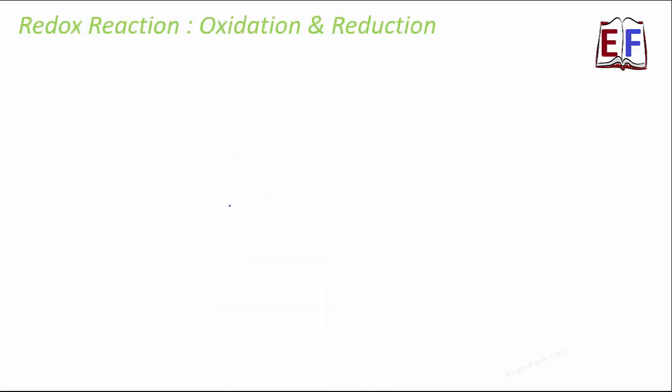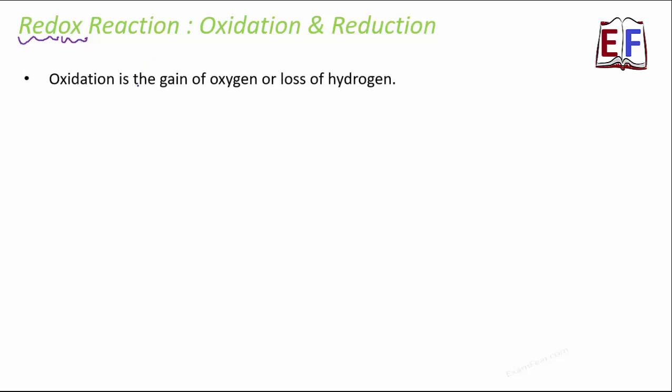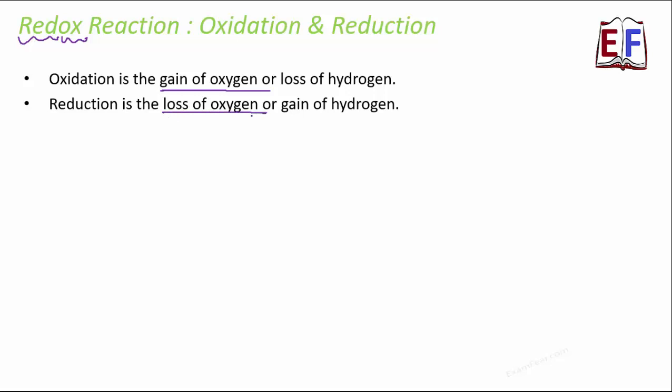The next reaction we want to discuss is a redox reaction — redox meaning reduction-oxidation. Oxidation, as the name suggests, means oxygen is getting added — it is the gain of oxygen. Reduction means loss of oxygen. In terms of hydrogen: oxidation is loss of hydrogen and reduction is gain of hydrogen. To keep it simple, just remember oxidation as gaining oxygen and reduction as losing oxygen.